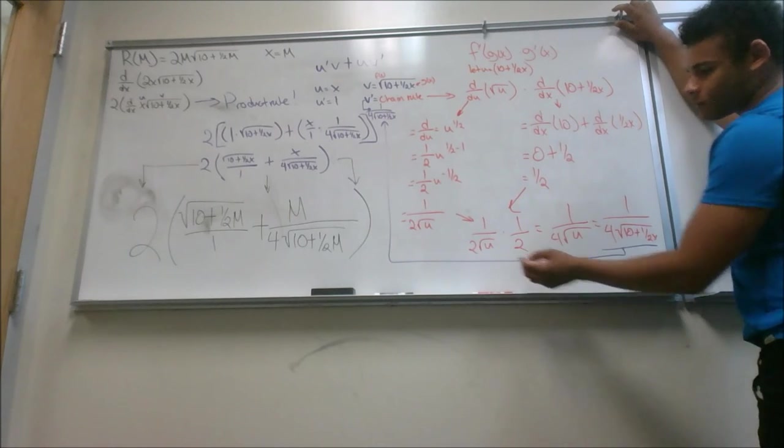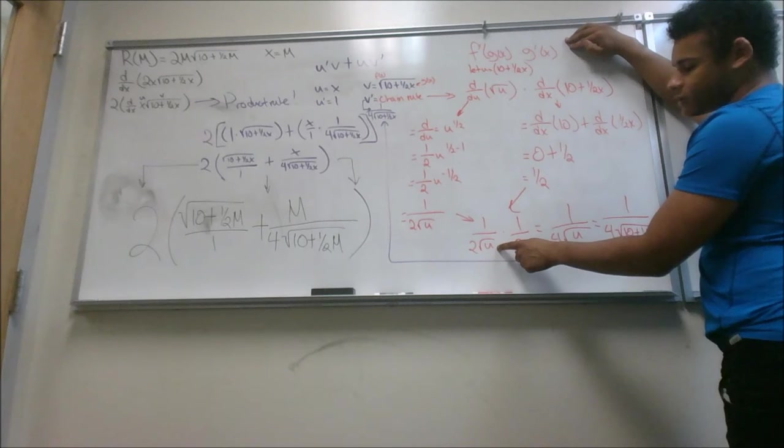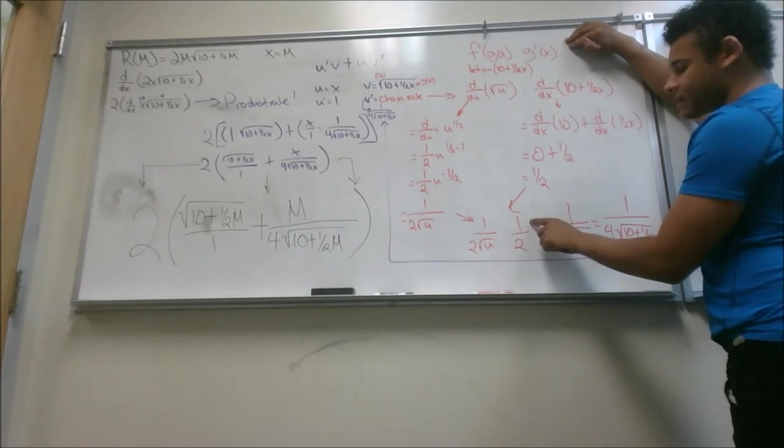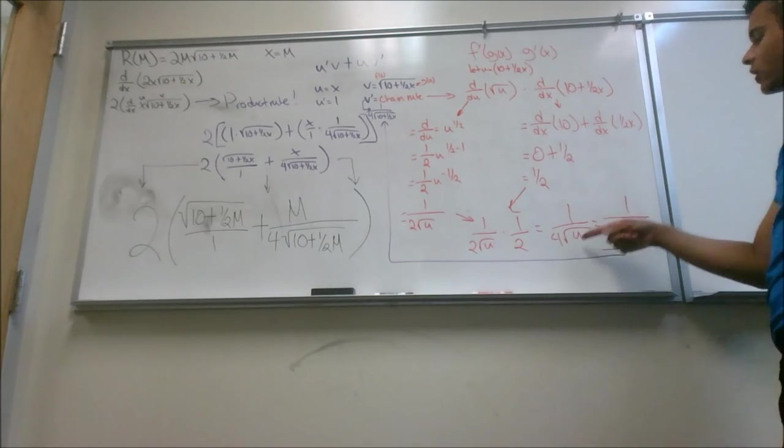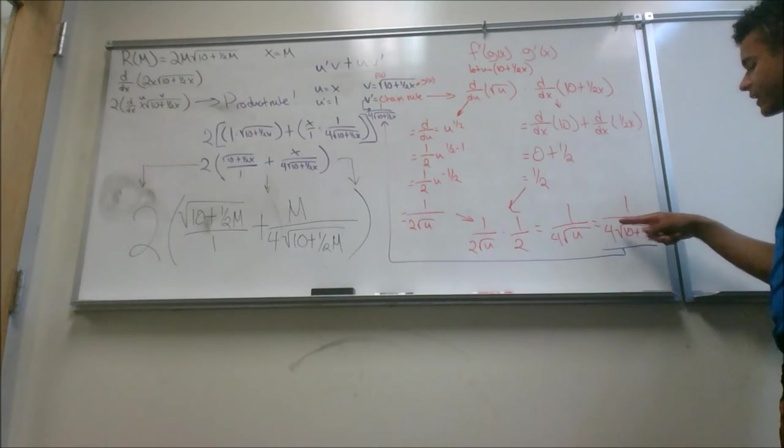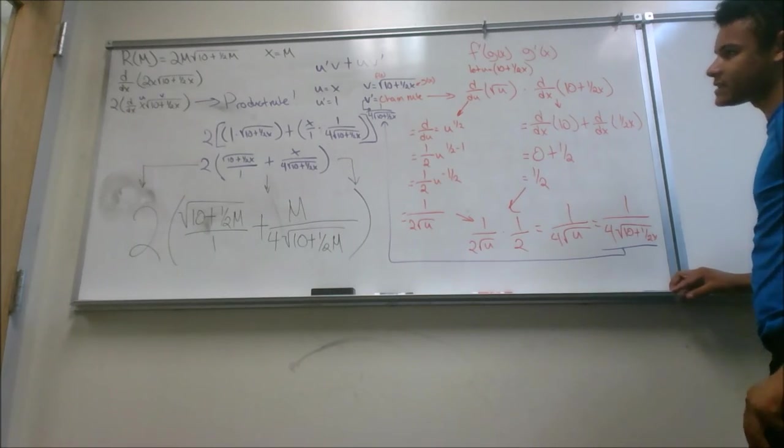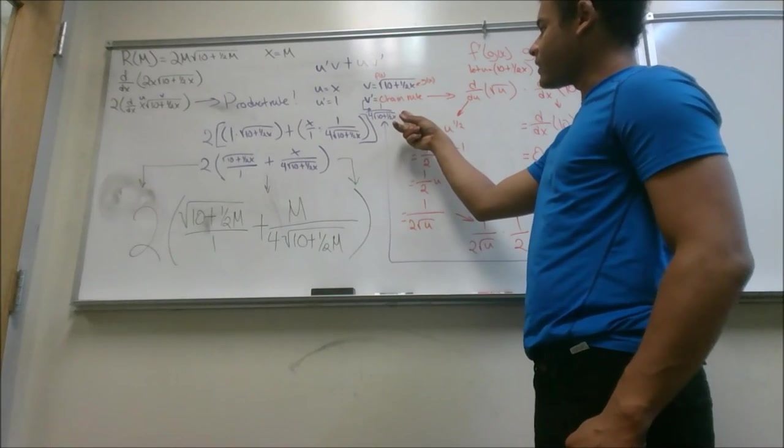So what we'll end up doing is, following the chain rule, multiply 1 over 2 times the square root of U times 1 half, which will give you 1 over 4 square root of U. After we substitute our U back in, we'll get 1 over 4 times the square root of 10 plus 1 half X. That is our V prime.